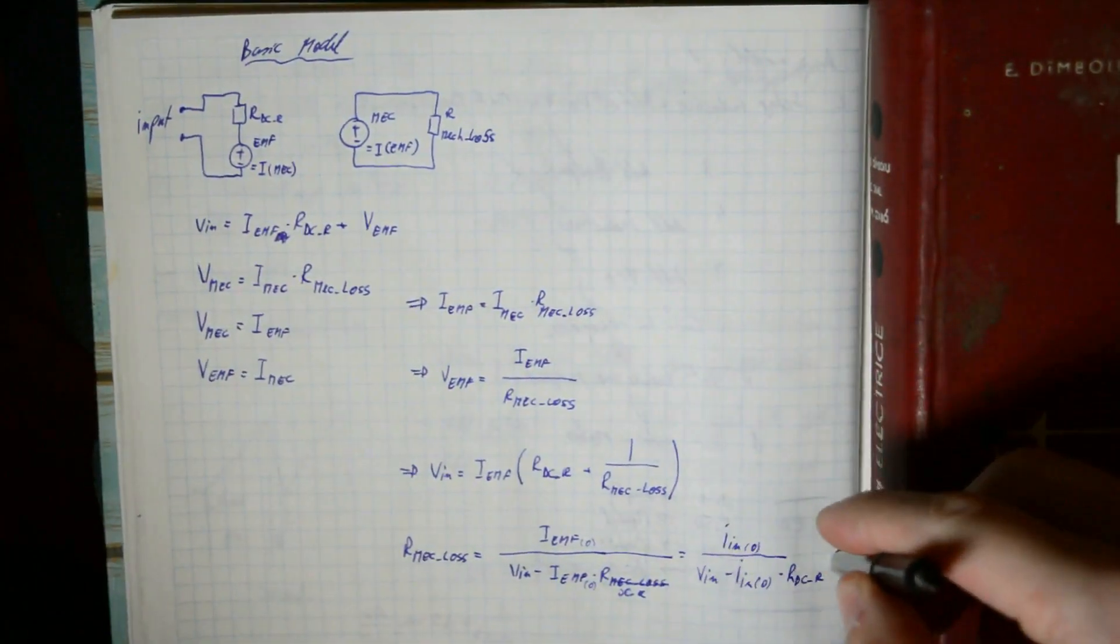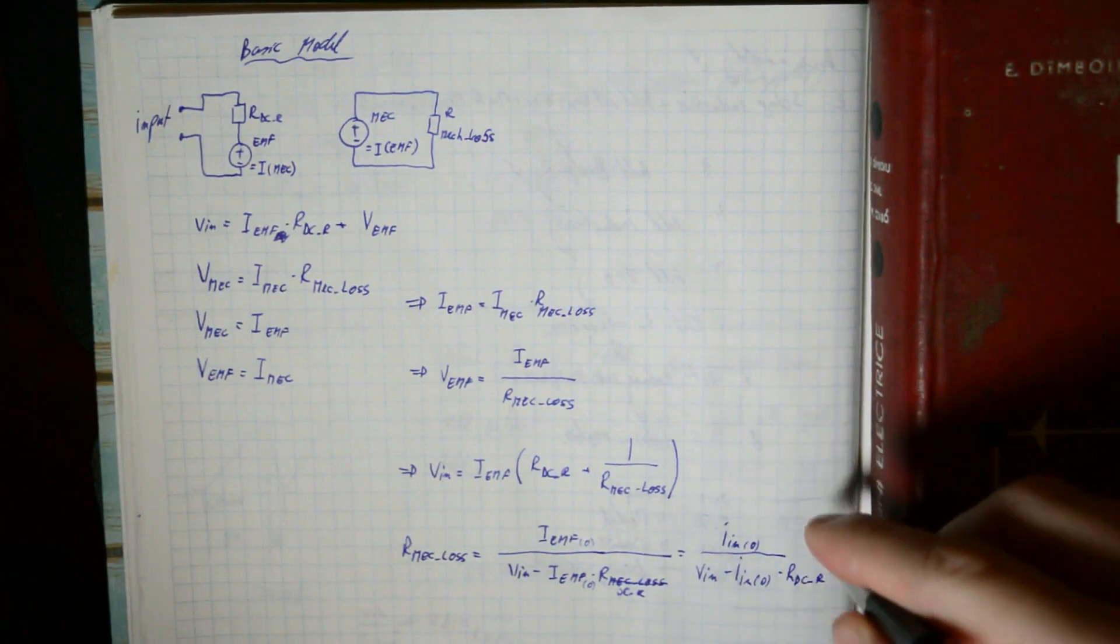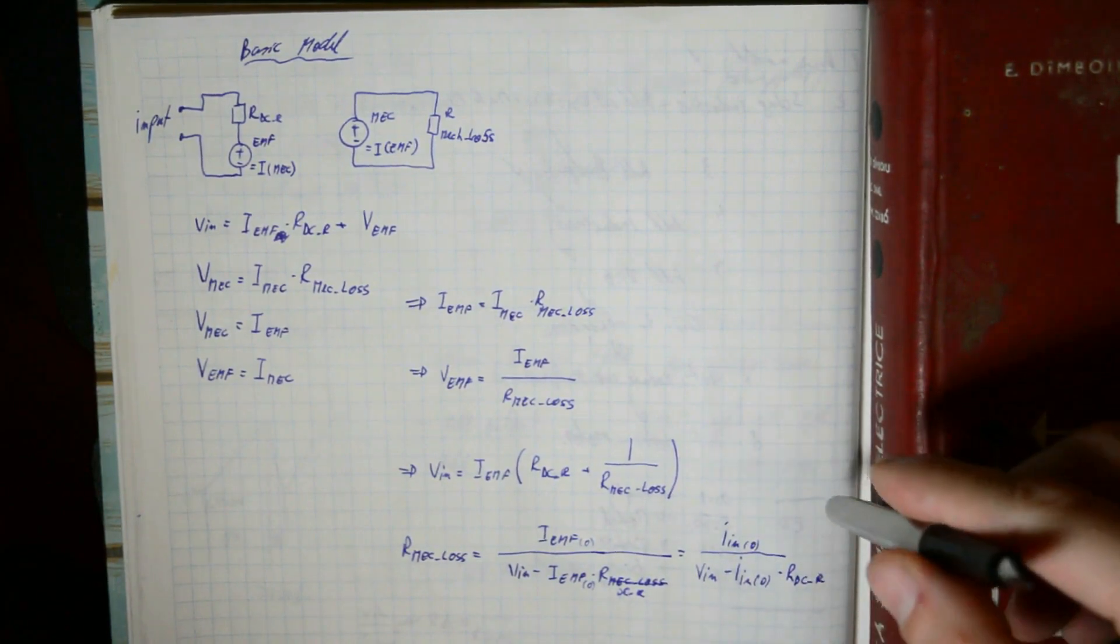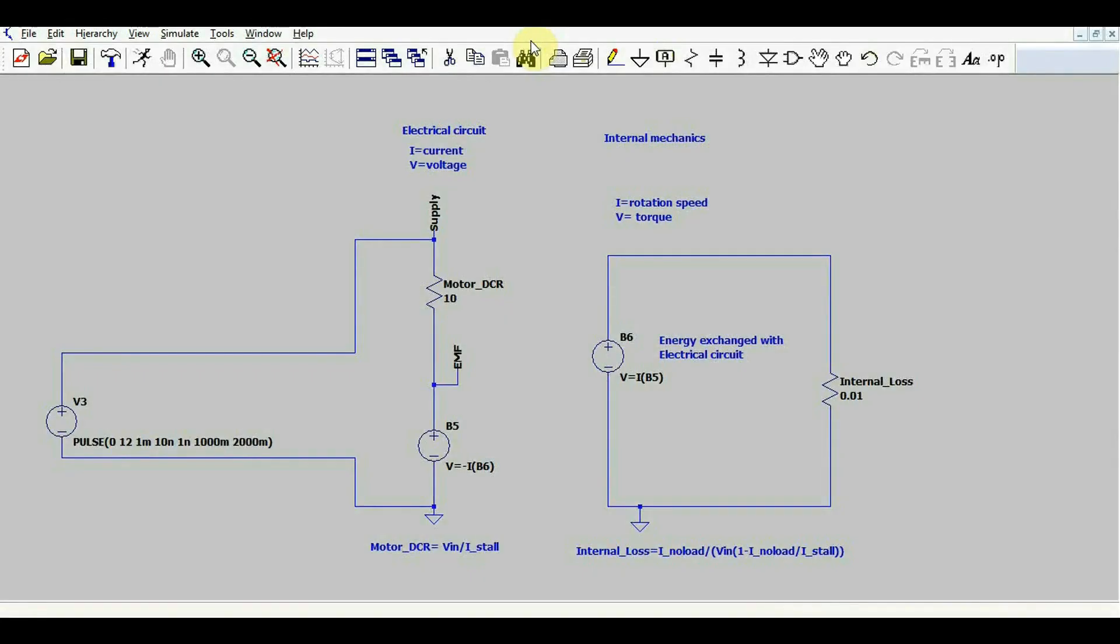And it now only contains our DC resistance of the motor coil and the mechanical losses. Basically, we just need this information: the input voltage, the zero load current, and our DC resistance of the motor. So this is all that mathematical modeling turned into a simulation model. I got my supply voltage, the motor's internal resistance, our EMF voltage, which is linked to the mechanical circuit, both of these being behavioral voltage sources.